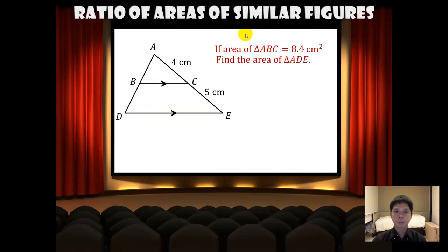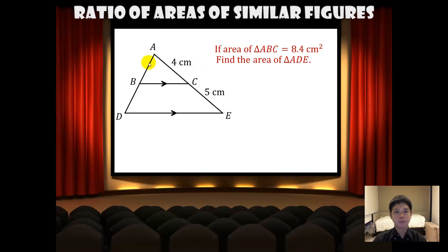Looking at another example: if triangle ABC has area 8.4 square centimetres, find the area of triangle ADE. These two triangles are similar — using the angle-angle-angle similarity test, these two angles are equal by corresponding angles, likewise for the next two angles, and the third angle is common. Hence by AAA, these two triangles are similar.